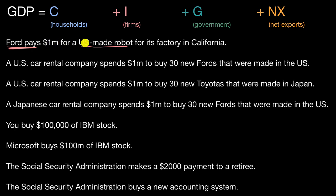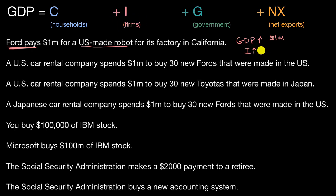So it's very clear that this would increase GDP — GDP would go up by $1 million, and the place it would be accounted for is in investment. Investment would go up $1 million. The reason GDP goes up $1 million is that you add $1 million to investment. This is a clear investment by a US firm.